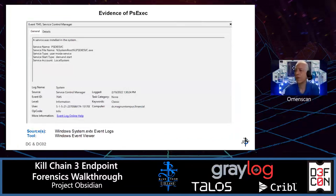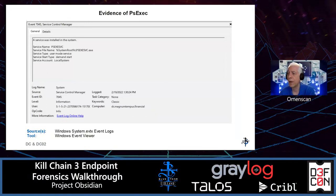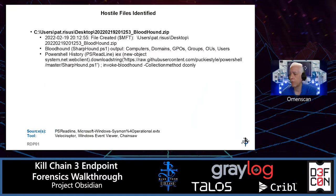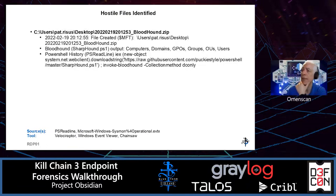So let's look at the first piece of evidence we notice in this environment. One of the things we look at very often when looking at a possibly compromised environment is the 7045 message. This one does not disappoint on the domain controller dc.magnum.tumpus.financial. We see PSExec being run on that machine via the PSExec service. We don't see any additional 7045 messages, but this is something we'll keep in mind as we look more at the data.